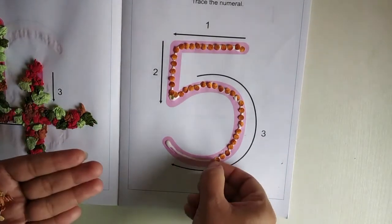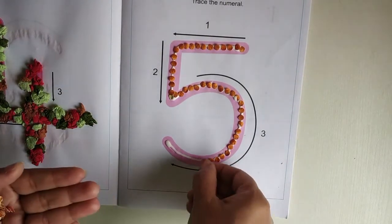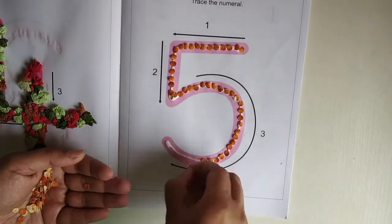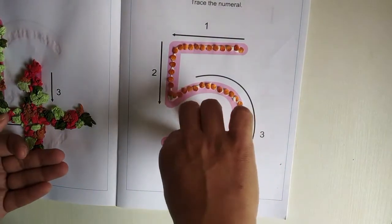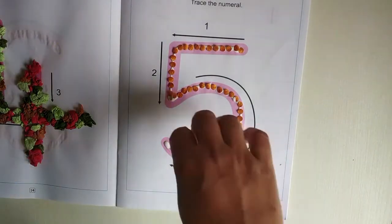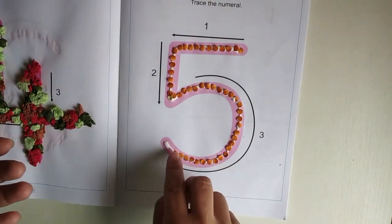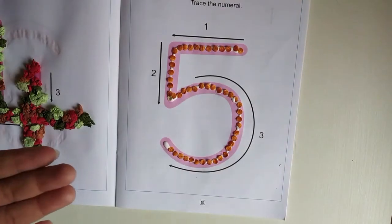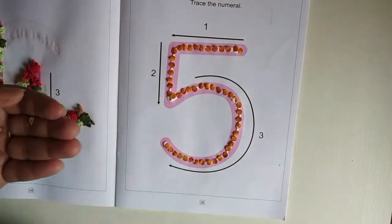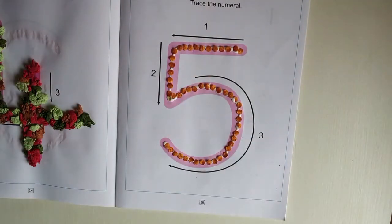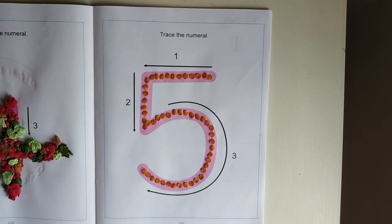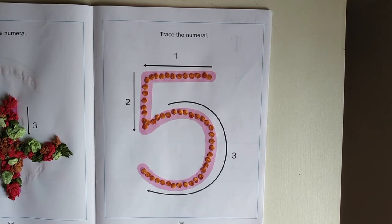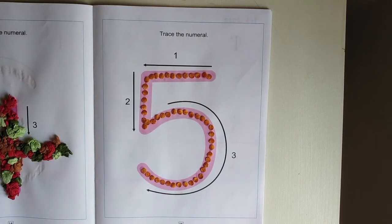I am almost done. My number 5 is done. My activity. Children, we have finished number 5 activity. Now,